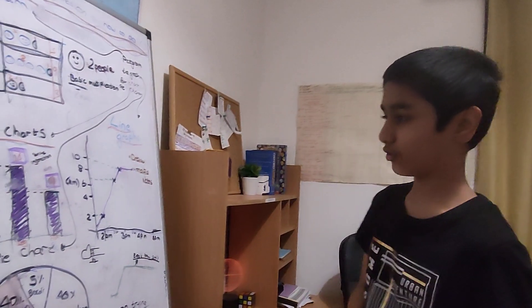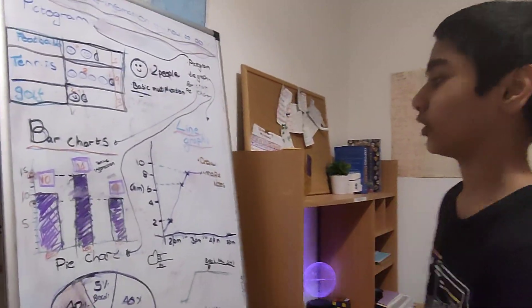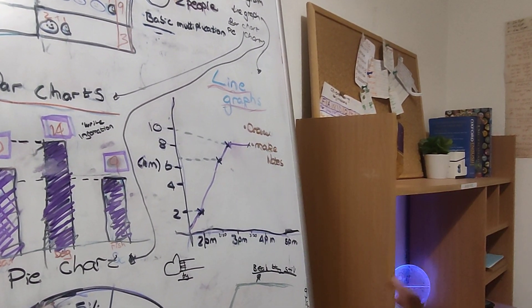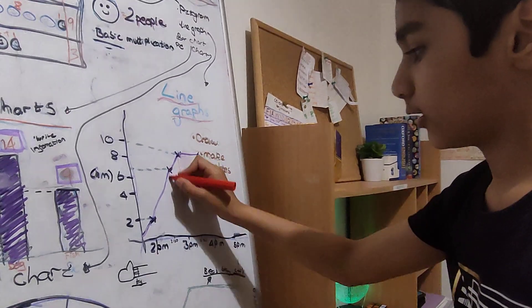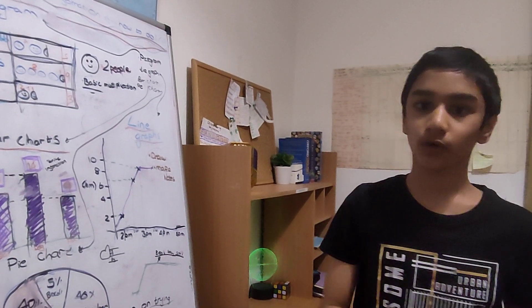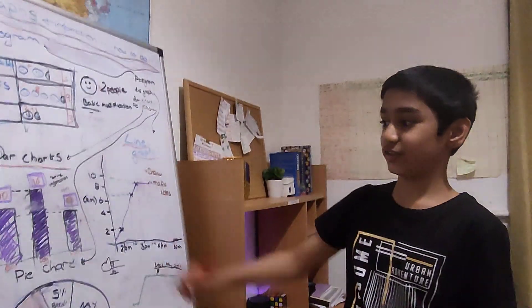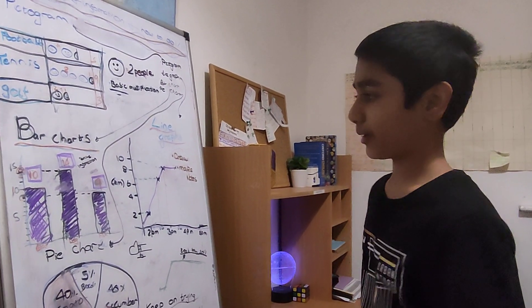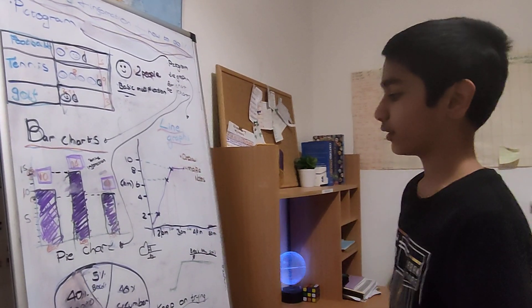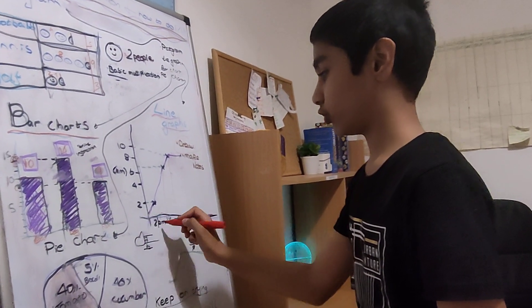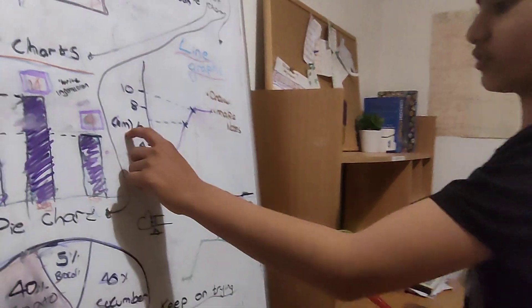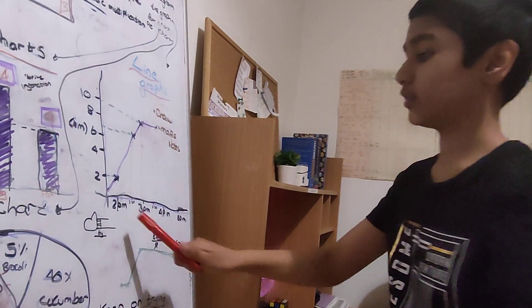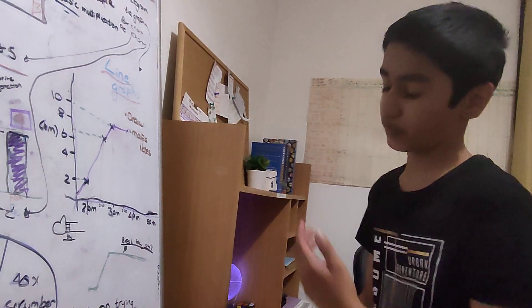Next up we move to line graphs. It gets a little complicated, but with practice it's easy. You should annotate — draw lines on the graph — because in the actual exam there'll be a separate answer booklet and a work booklet where you can do your working out. Always look at the axis labels: these are kilometres on the side, and the horizontal axis shows time — 2 p.m., 3 p.m., 4 p.m., 5 p.m.